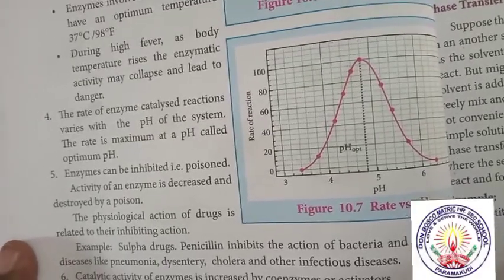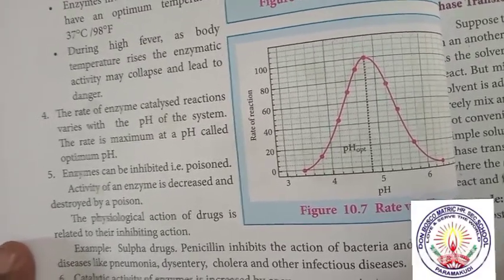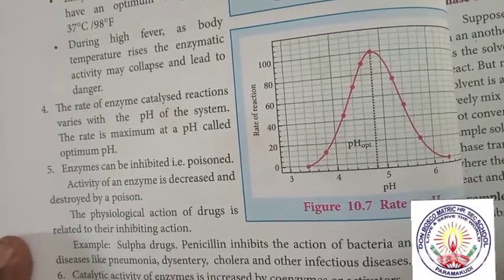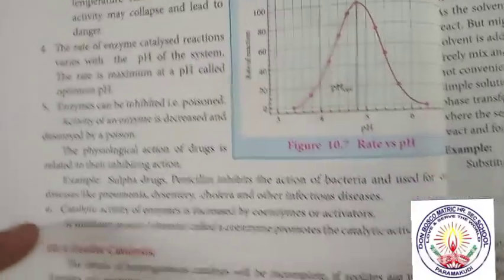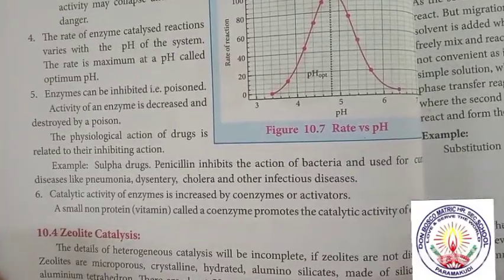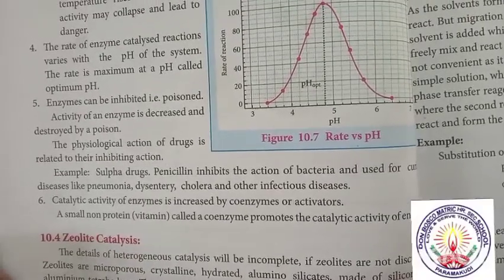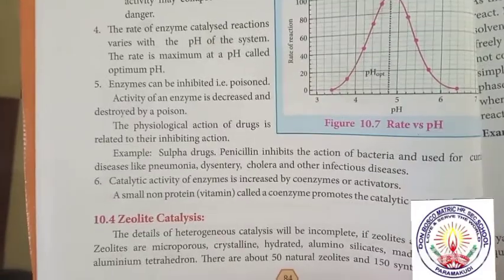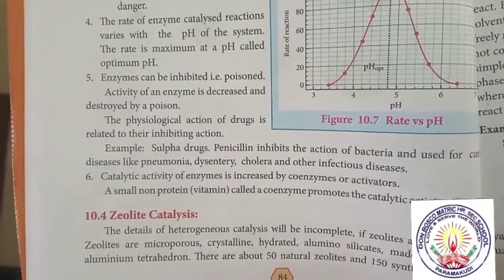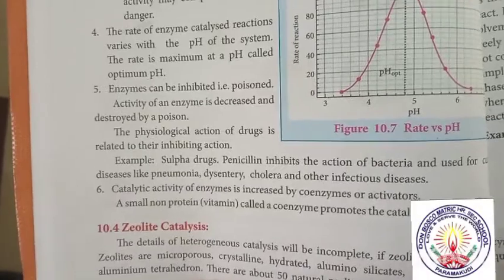Enzymes can be inhibited — that is, poisoned. The activity of an enzyme is decreased and destroyed by a poison. The physiological actions of drugs is related to their inhibiting action. For example, sulfa drugs and penicillin inhibit the action of bacteria and are used for curing diseases like pneumonia, dysentery, cholera and other infectious diseases.